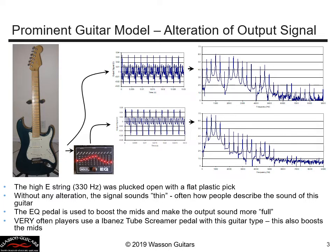Let's look at an example. This is one of the most popular electric guitar models of all time. If I pluck the high E string and plot its output signal, it looks like the top plot. Examining that upper-right-hand-corner plot very carefully, the higher frequency modes are actually quite strong compared to the other modes, and the first couple of modes are quite low compared to the others.